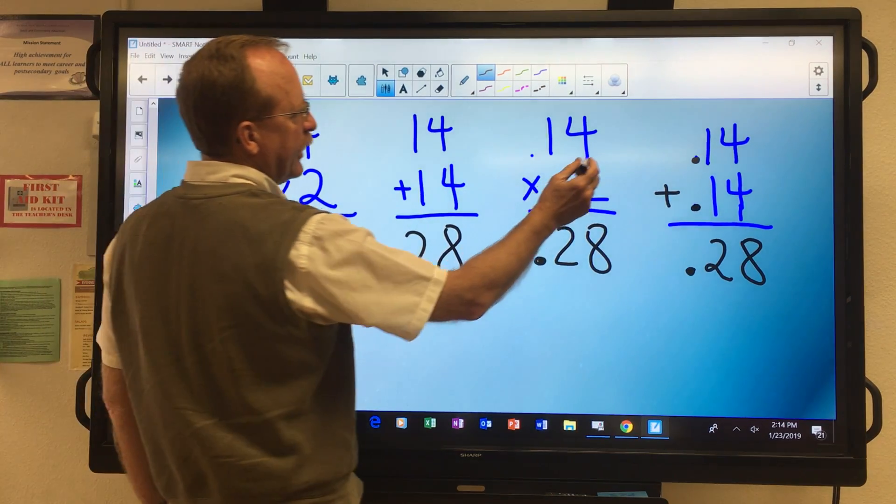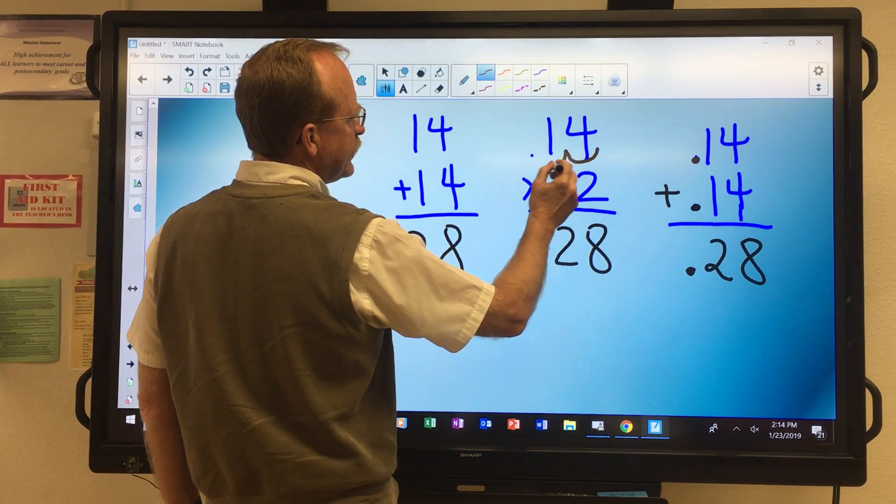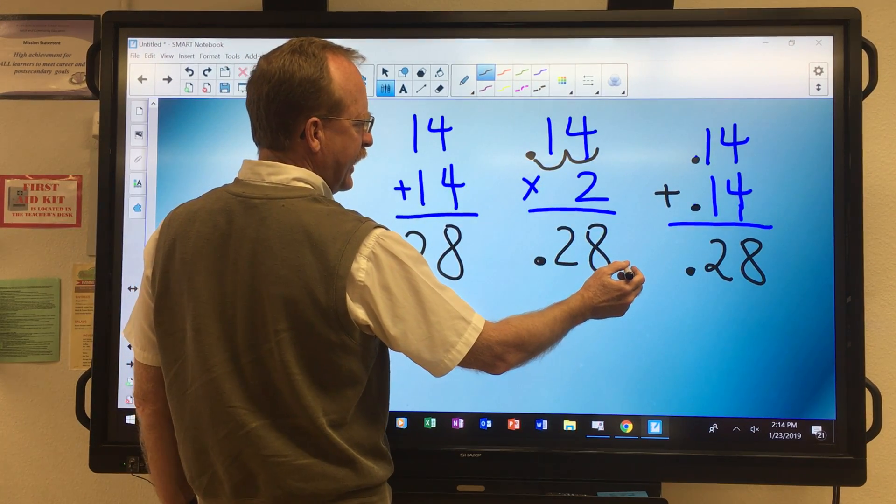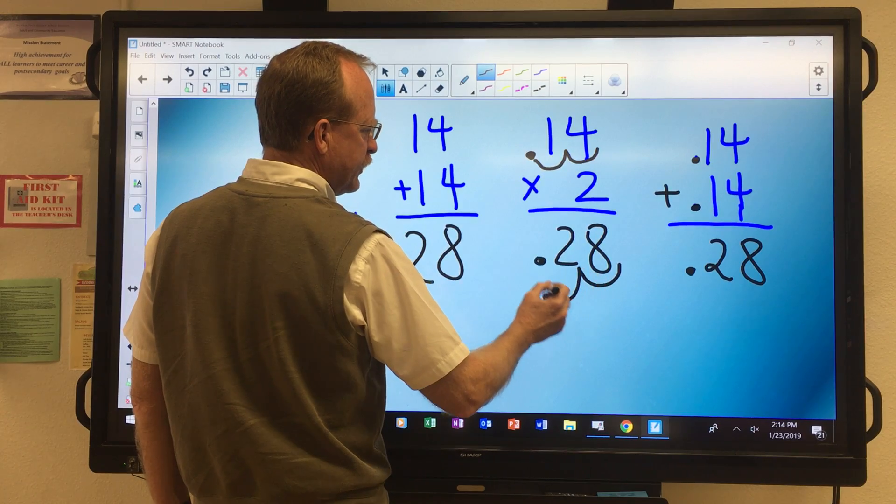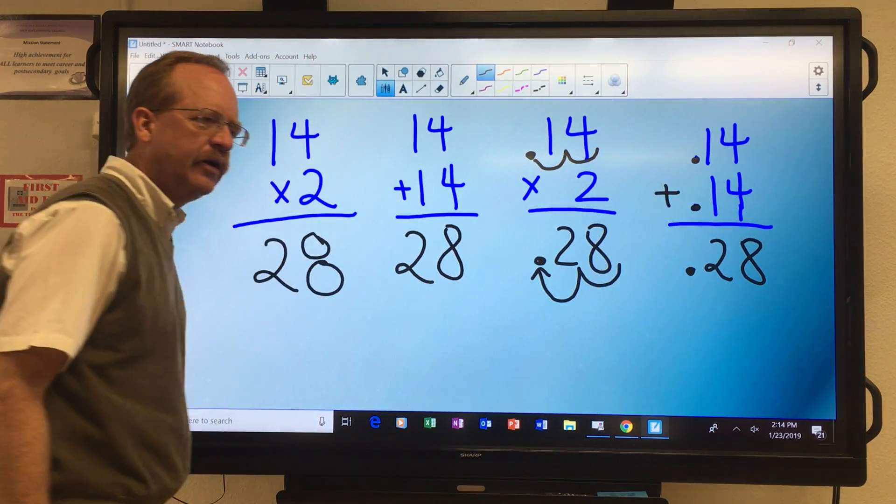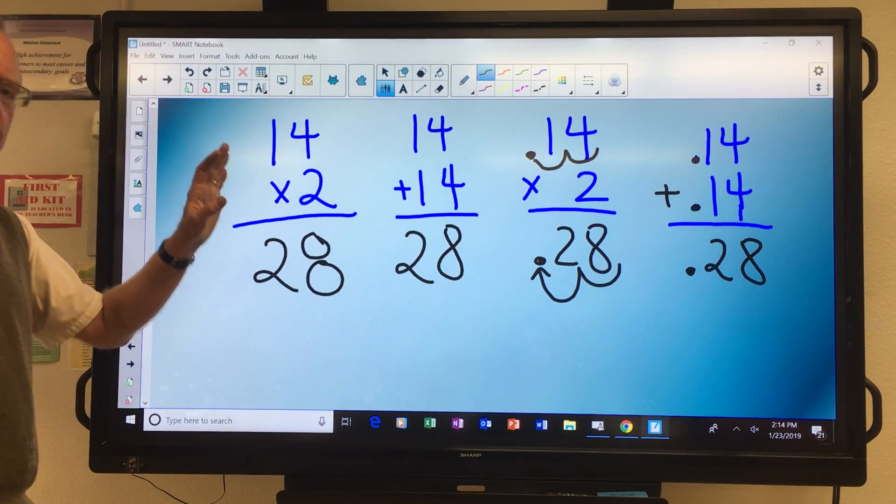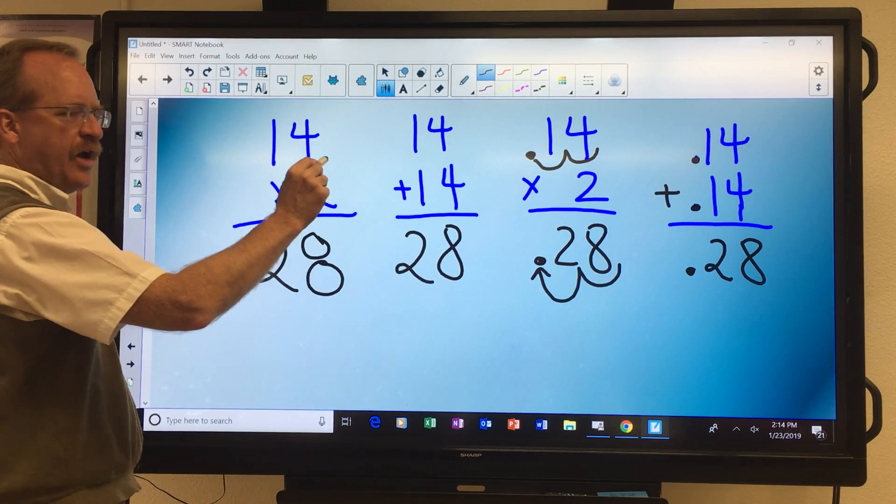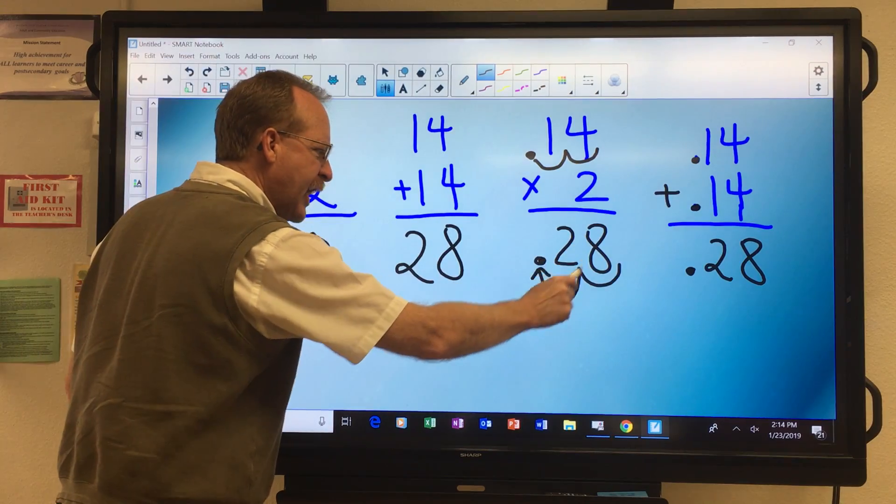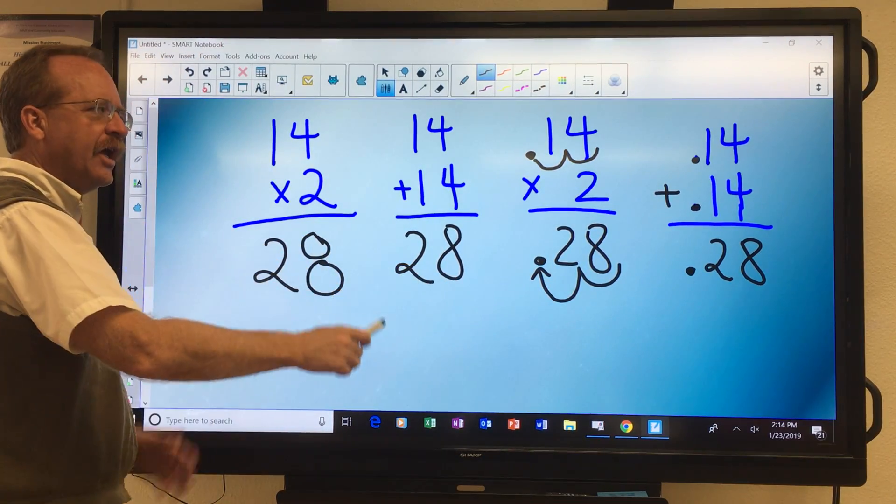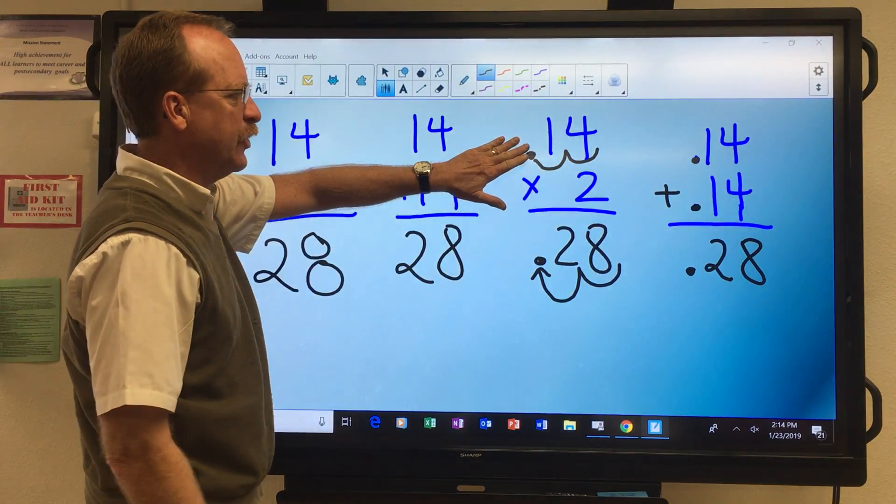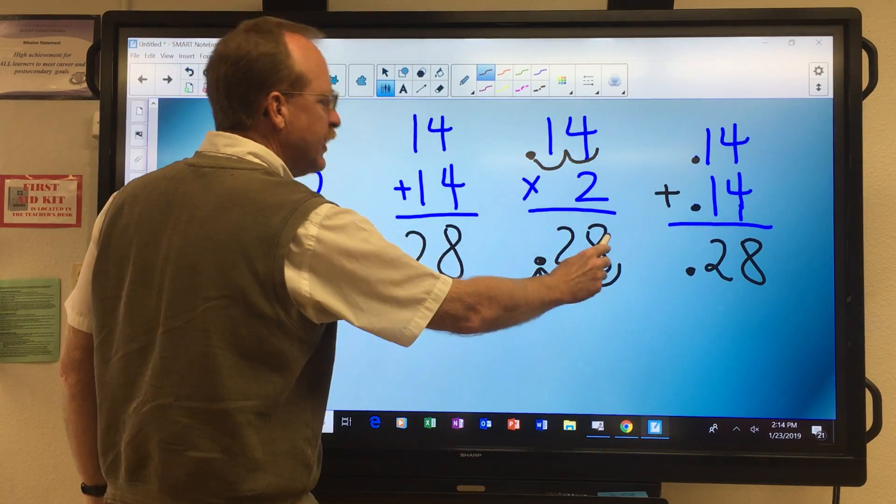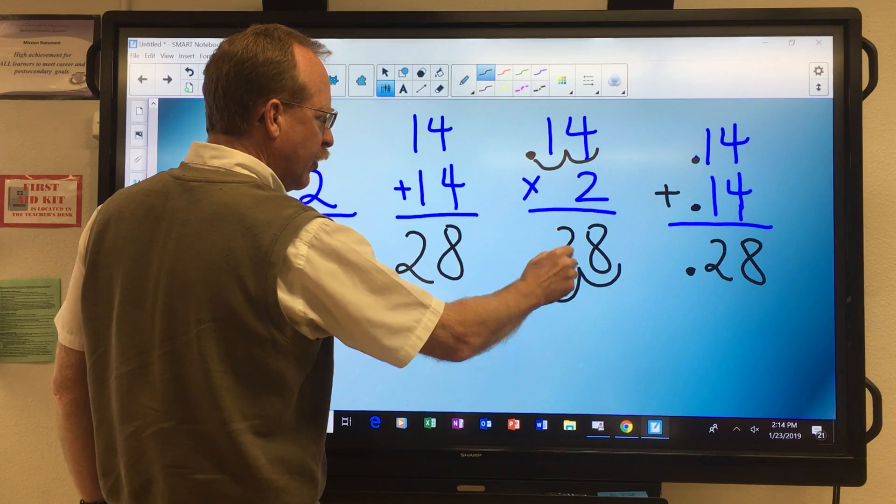What we notice is this. I count 1, 2 here to get to the decimal, and the answer is 1, 2 over here. What you have to do if you're multiplying decimals is count the spaces that you have, and then do that in your final answer. You can ignore the decimal as you're multiplying, but when you finish, count the spaces, and then bring it over to that spot.